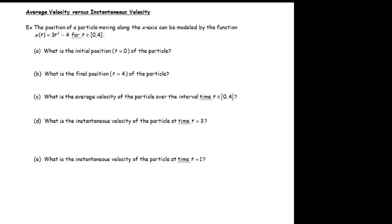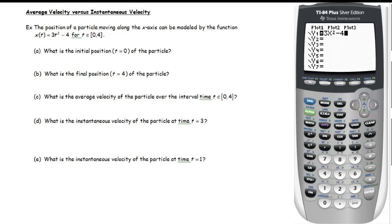In this example we have a particle that's moving along the x-axis, modeled by a certain function, and our goal is to understand its average velocity and its instantaneous velocity. So the first thing I'm going to do is put this function into my calculator. It makes it easier to analyze everything. So I put it in y1 as 3x squared minus 4. You don't need to be in parametric mode, you can stay in function mode. It's just that t becomes an x in our calculator. And so this is the position of our particle.